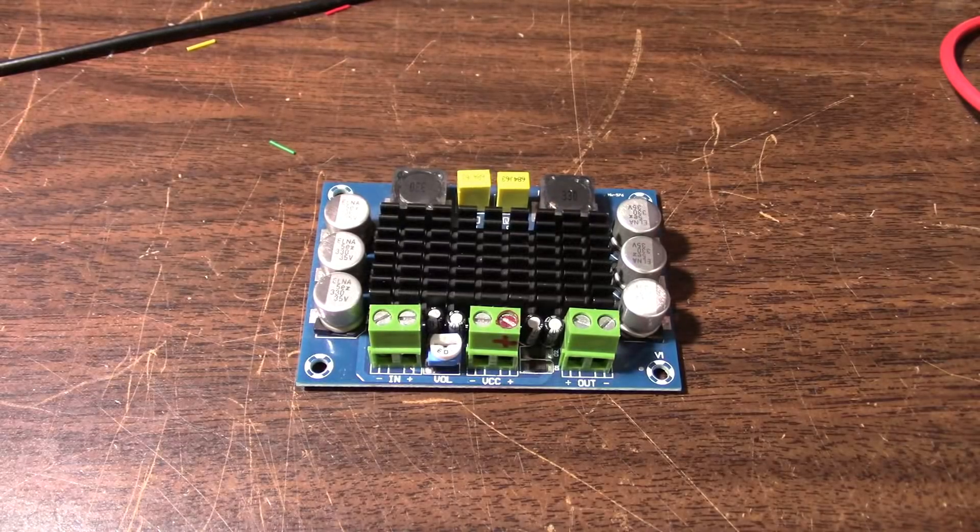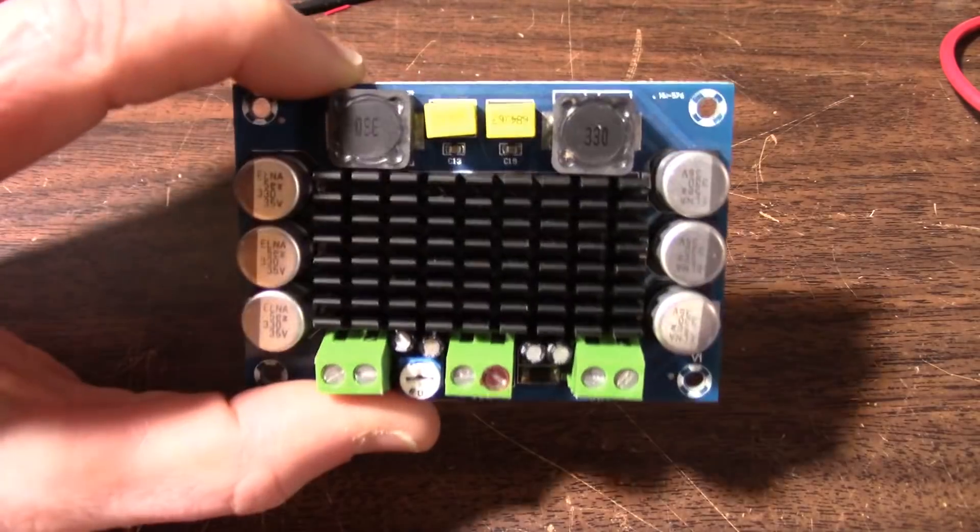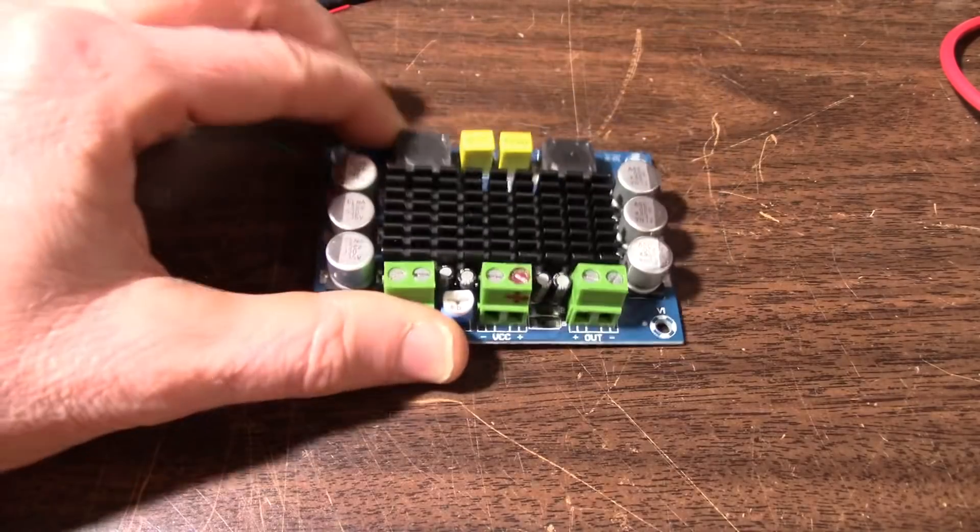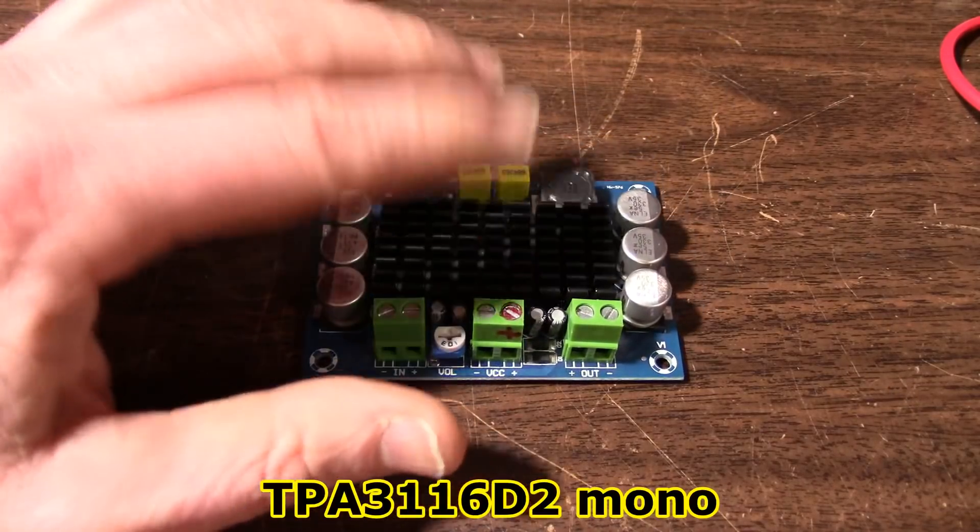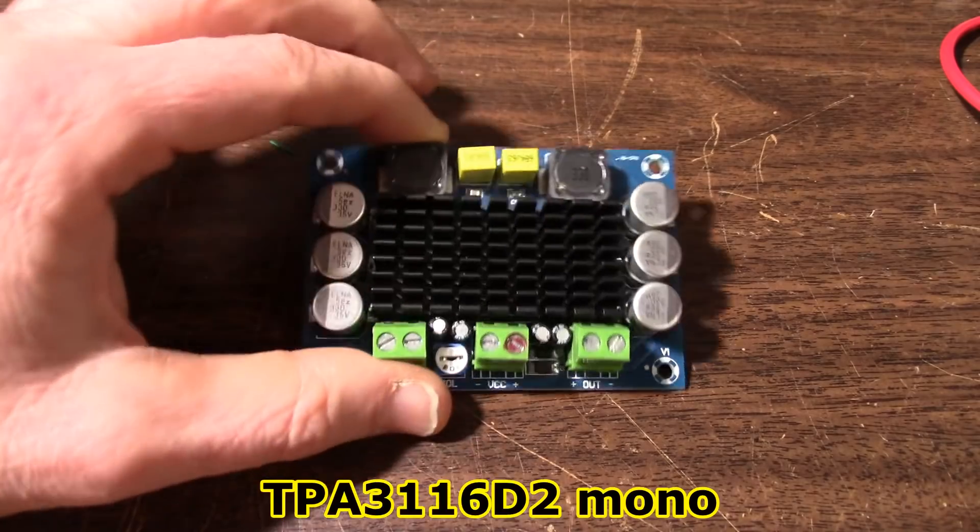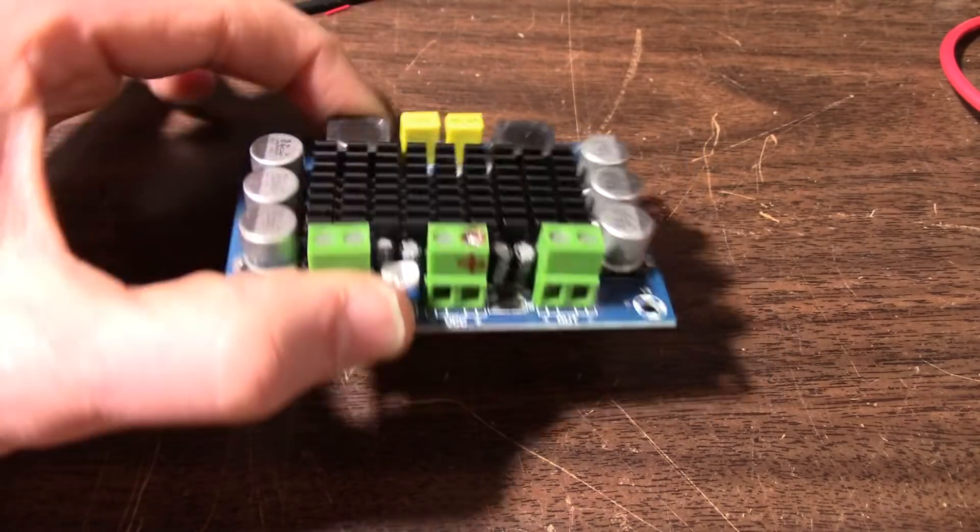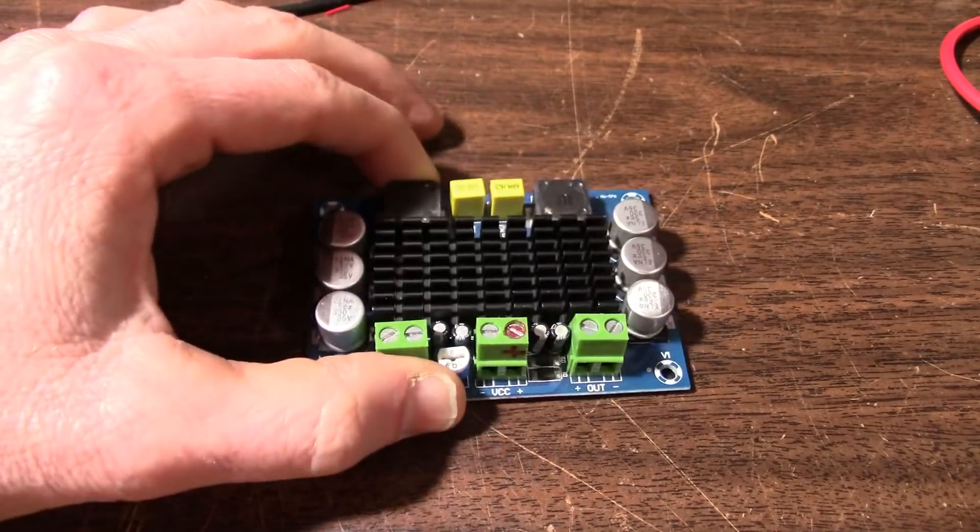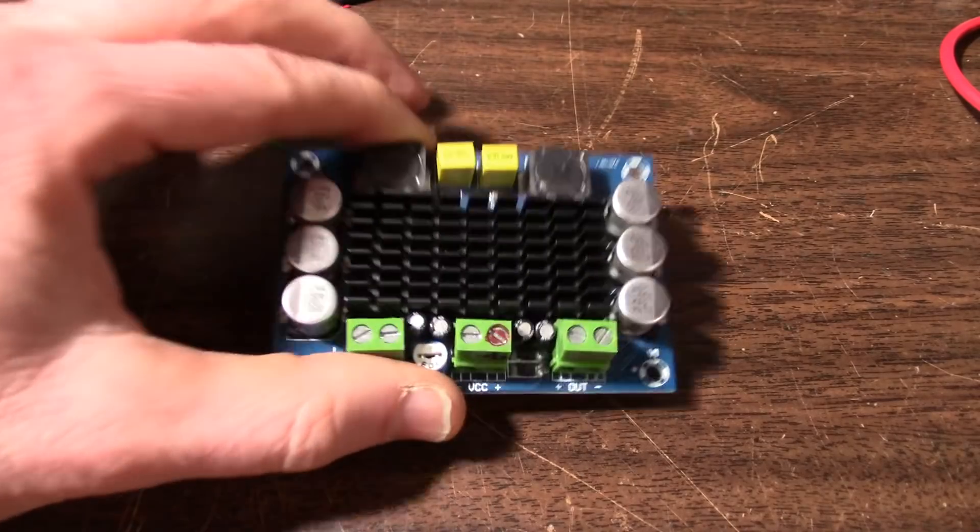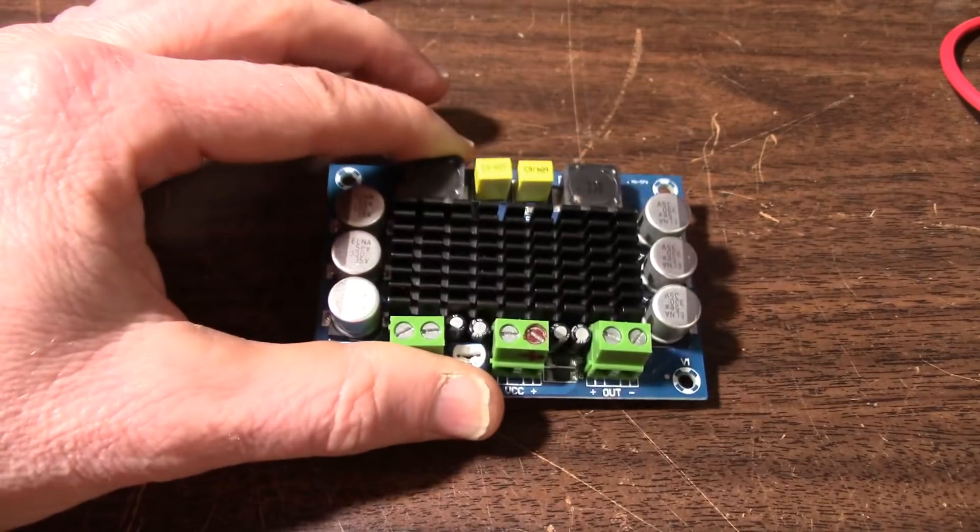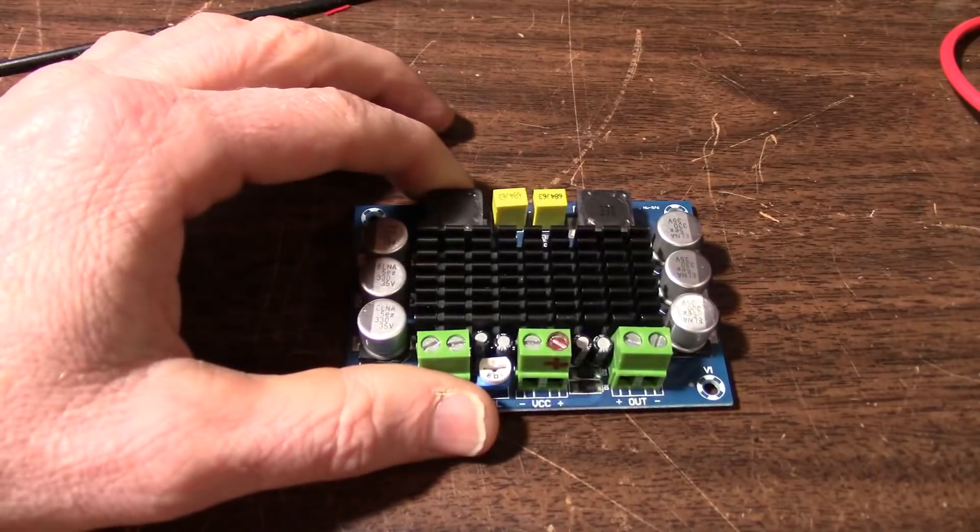Greetings everyone! Welcome back to the bench. Today on the bench I have a Class D amplifier board. What I want to do is measure its power draw from the power supply versus its output power and figure out what its efficiency is and how much power it dissipates.